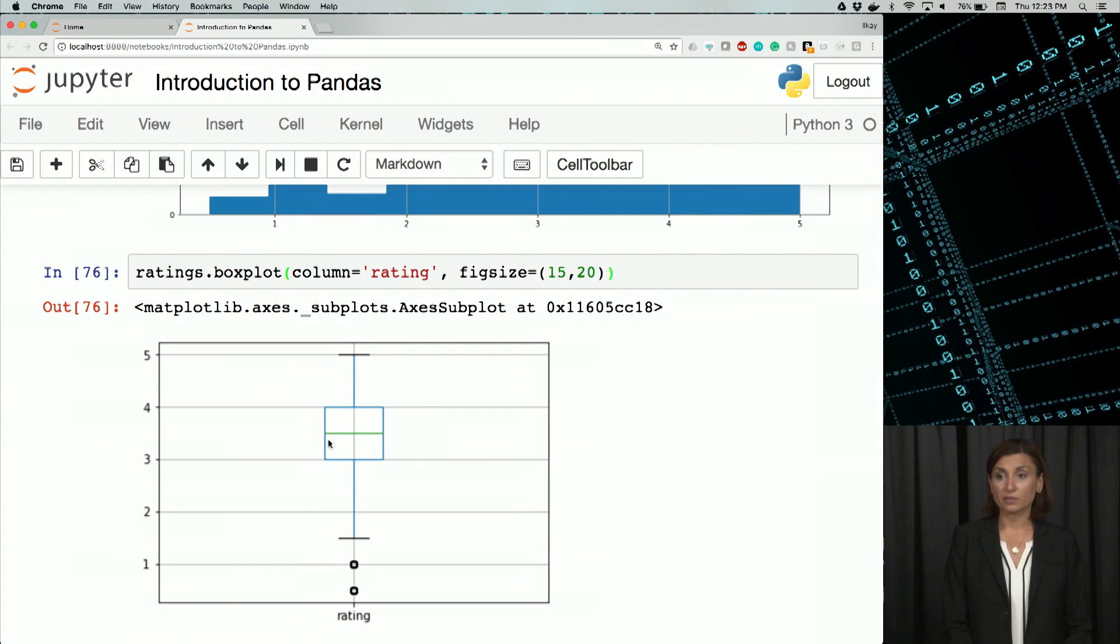As you remember, our mean for our ratings was about 3.5. Here we see the average and the maximum and the minimum of that distribution nicely shown on this boxplot. 0.5 and 5 on top.